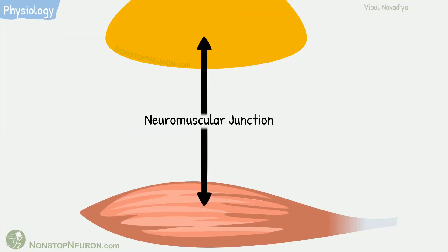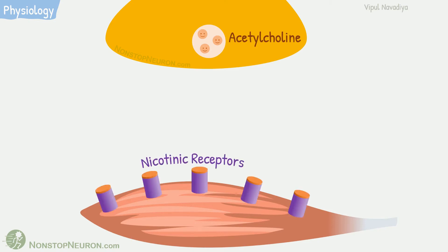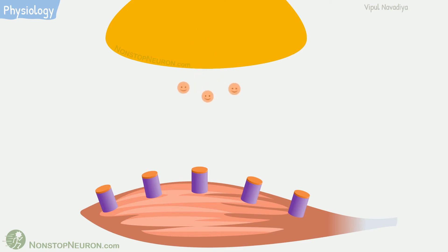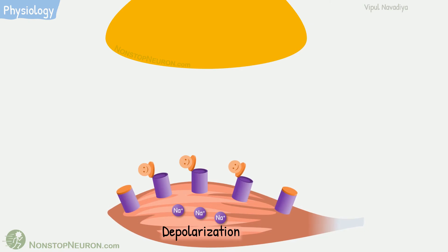This is the neuromuscular junction. This is the presynaptic nerve terminal, and this is muscle. The nerve terminal has acetylcholine stored in vesicles, and the postsynaptic membrane has nicotinic receptors. When an action potential comes, acetylcholine is released into the synaptic cleft. It then acts on nicotinic receptors and opens the channel, resulting in influx of sodium, causing depolarization and eventually muscle contraction.